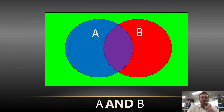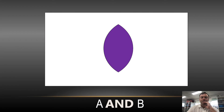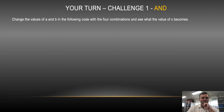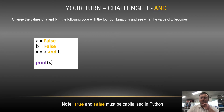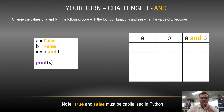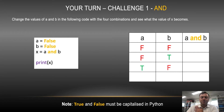So just pause the video and see if you can work out what color would be A and B. Hopefully you worked out that it was just purple, that Vesica Piscis in the middle. Have a go at this in Python — change the code so A is equal to false, B is equal to false, and change A and B to build your own little truth table. Hopefully you'll see when you output it: FALSE FALSE gave you FALSE, FALSE and TRUE gave you FALSE, TRUE and FALSE gave you FALSE, and then TRUE and TRUE gave you TRUE.